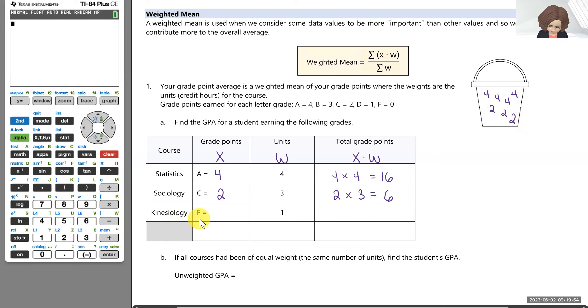And then kinesiology, this student unfortunately failed. So F's worth no points. Fortunately, it's only a one unit class. So into my bucket over here, I would get a zero, and that would occur just once. And of course, zero times one is zero. So my bucket over here represents the total points earned for the student this semester. And so in this bucket, if we add up all those points, we can do that here on our table by saying, what is the sum of these x times w values we just calculated. So 16 plus six plus zero is 22 points. So in total here, if we added those up, the student had earned 22 points.